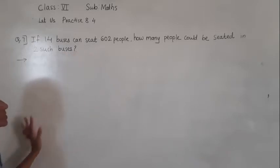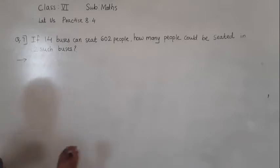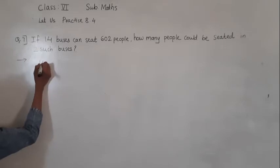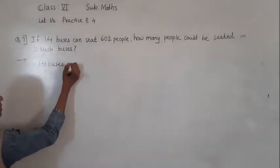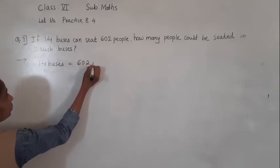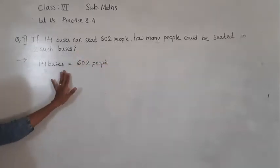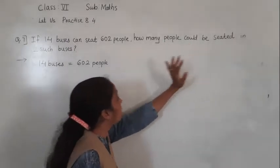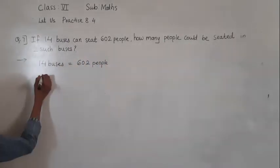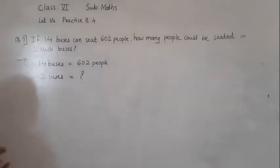If 14 buses can seat 602 people, how many people could be seated in 2 such buses? What is given? In 14 buses, 602 people can sit. And we have to find how many people could be seated in 2 buses.